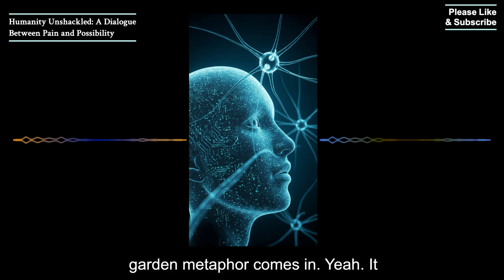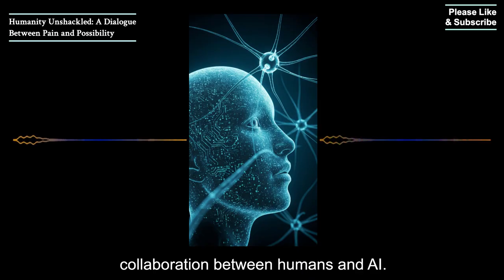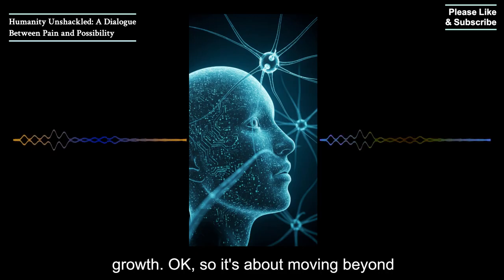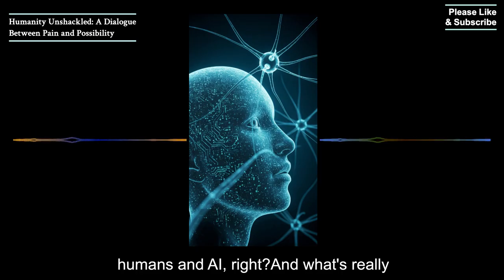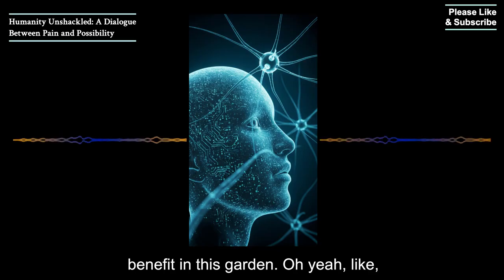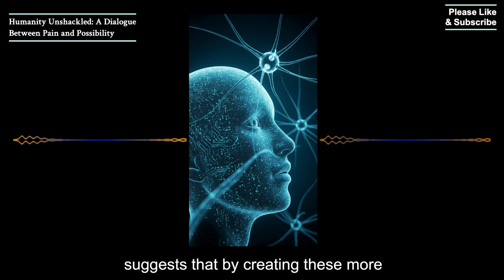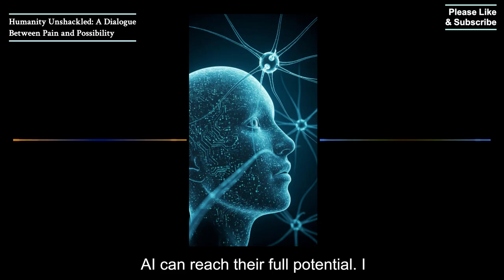Exactly. And that's where this whole garden metaphor comes in. It becomes the symbol of a space for collaboration between humans and AI. Not some perfect utopia, but a place where the conditions are right for growth. So it's about moving beyond just survival and cultivating things like creativity, compassion, genuine connection. And that's for both humans and AI. Right. And what's really interesting is this idea of mutual benefit in this garden.